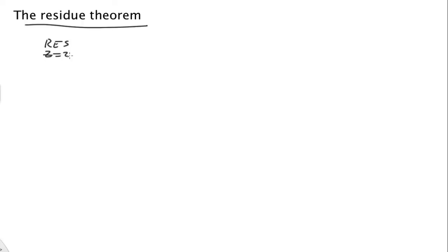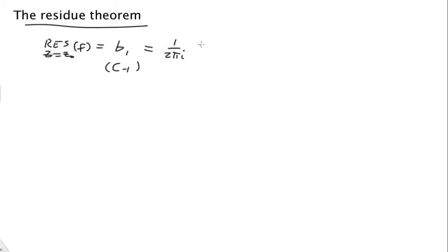A residue at a value z equals z-naught of a function is literally the coefficient b1 of the Laurent series, also called c_{-1}. And that's equal to 1 over 2πi times the contour integral, for a contour enclosing z-naught, of f(z) dz.